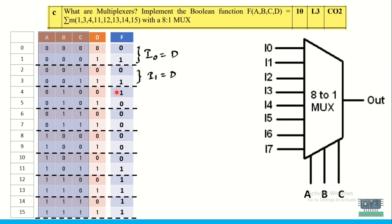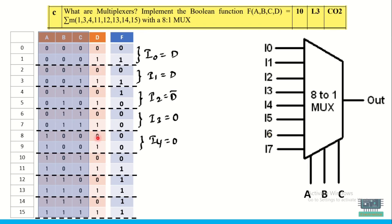For select line 0 1 1, whatever d is, the output is 0, so i3 = 0. Similarly for select line 1 0 0, the output is always 0 regardless of d, so i4 = 0. For select line 1 0 1, whatever d is given, that is the output, so i5 = d. For select lines 1 1 0 and 1 1 1, whatever d is, the output is always 1, so i6 = 1 and i7 = 1.